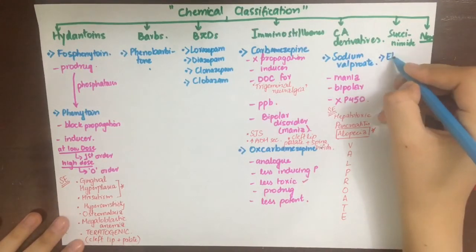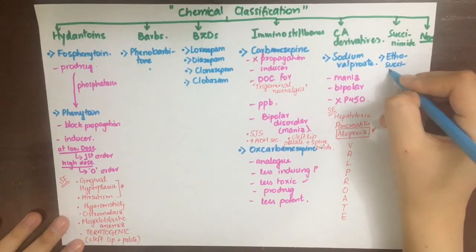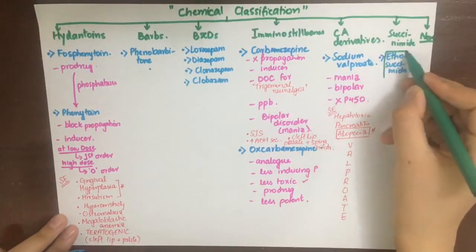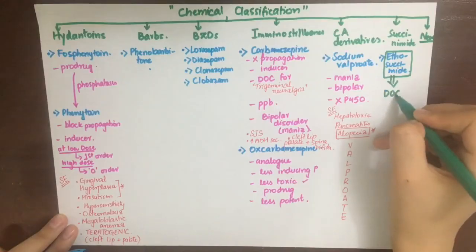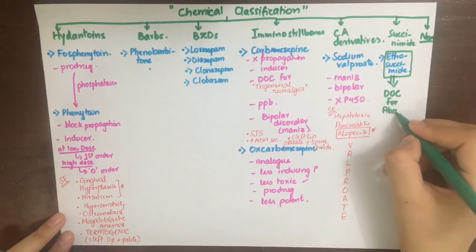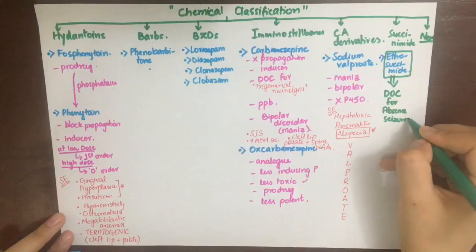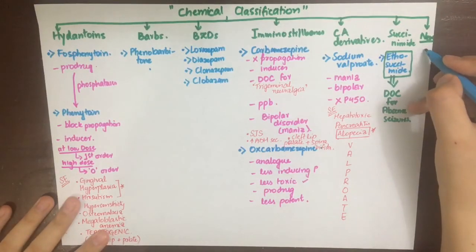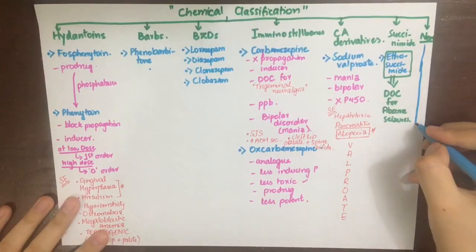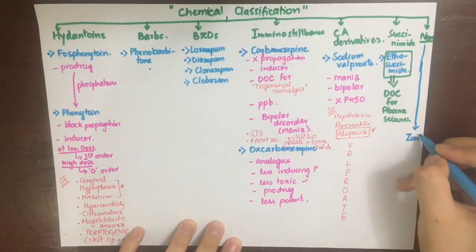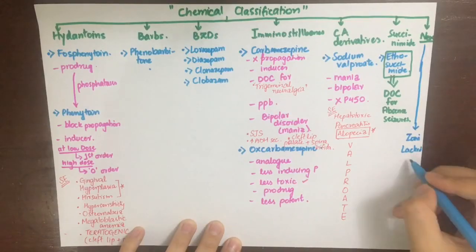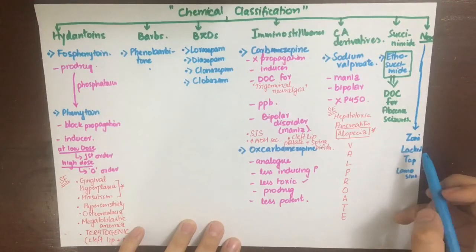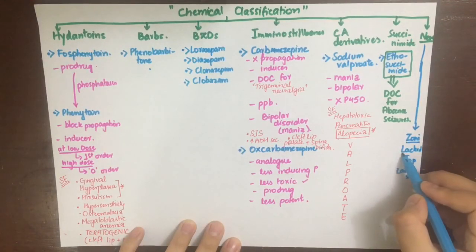The succinamide derivative ethosuximide is chiefly used for absence seizures due to its mechanism of blocking T-type calcium channels in the thalamus. The newer antiepileptics include zonisamide, lacosamide, topiramate, and lamotrigine, which can be remembered by the mnemonic 'Zoni lacked top limousine.' That covers antiepileptics or anticonvulsants.